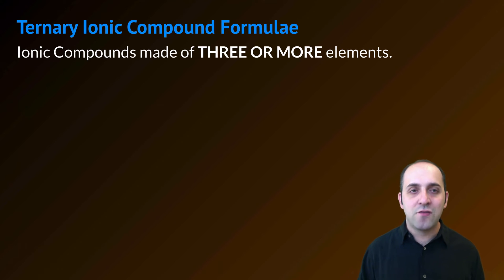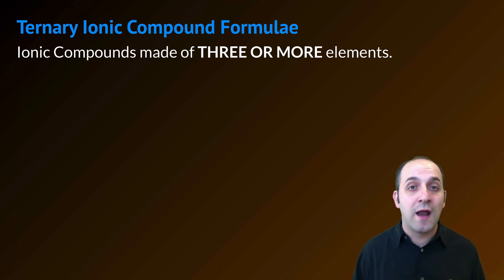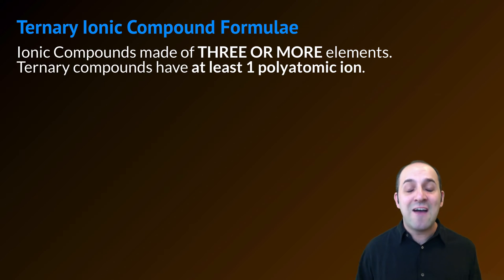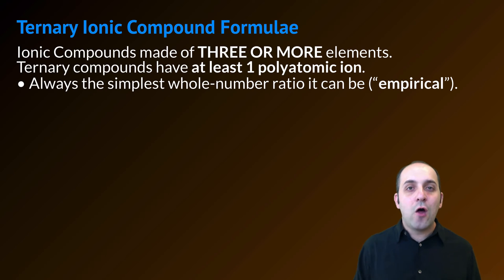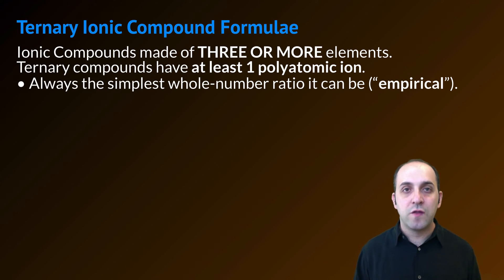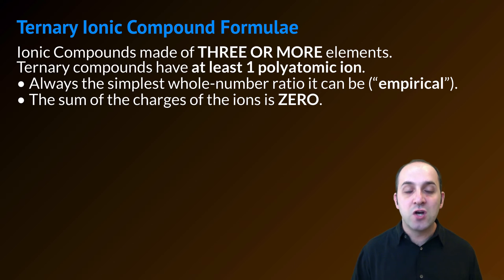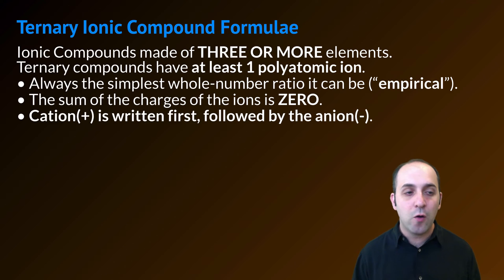Ternary ionic compounds are ionic compounds made out of three or more elements. The only way that you can have an ionic compound where this is true is to have at least one polyatomic ion in that compound. The rules are not all that different than they were for binary ionic compounds. The ratio of ions in the compound always has to be the simplest whole number ratio that it can be, and the sum of the charges of the ions has to be equal to zero.